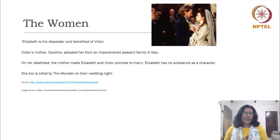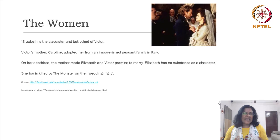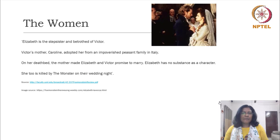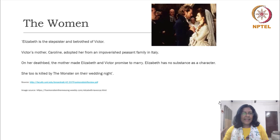Let us look at the women characters in the novel very quickly. The most important one is Elizabeth, who is the betrothed of Victor. In the 1818 edition she is described as a distant cousin to Victor, and in the 1831 edition she is revised and referred to as an adopted sister — who has been adopted by Victor's mother, an impoverished child from a peasant family in Italy adopted by Victor's mother, Caroline. She marries Victor and on the wedding night she is also killed by the monster.